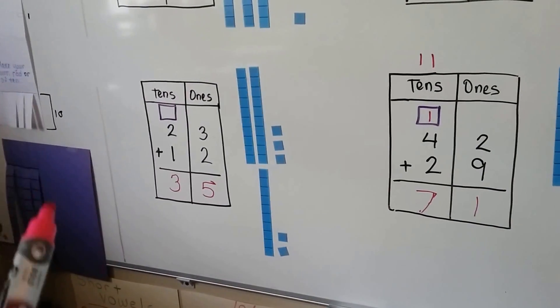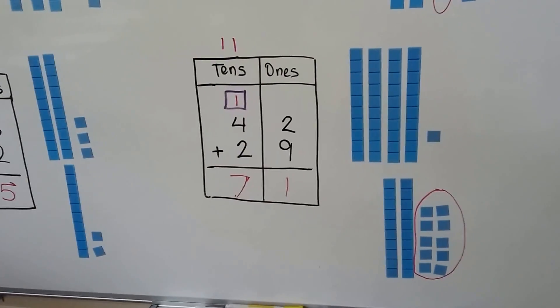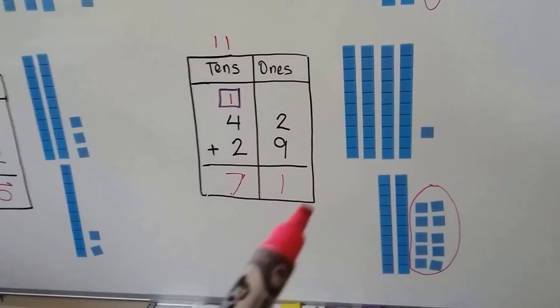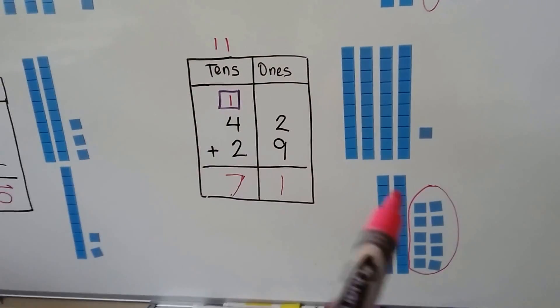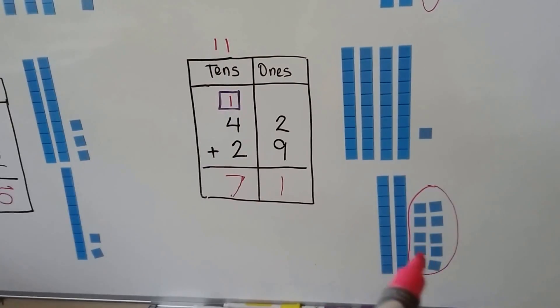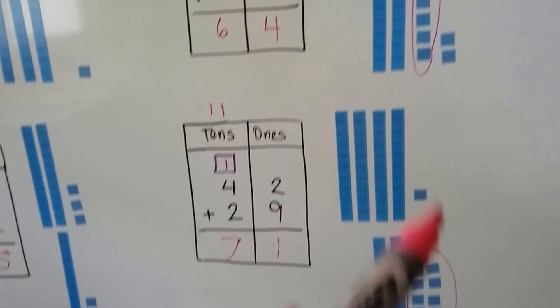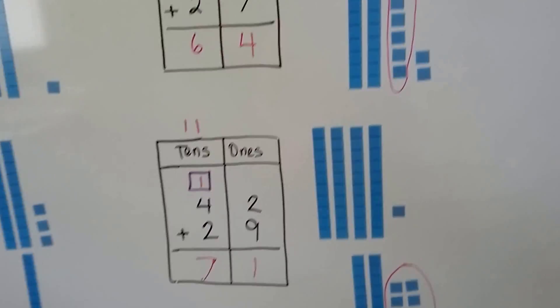With school paper or construction paper you can use models to help you count and regroup tens. Make yourself lots of ones so that you can add them together and have enough to make tens.